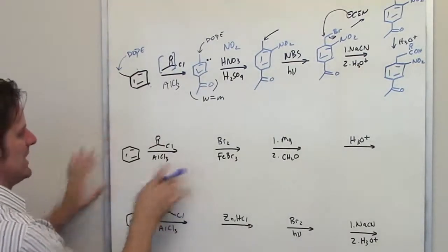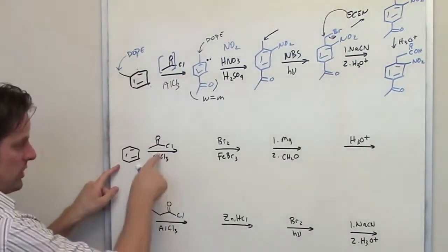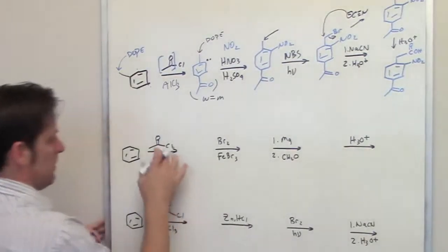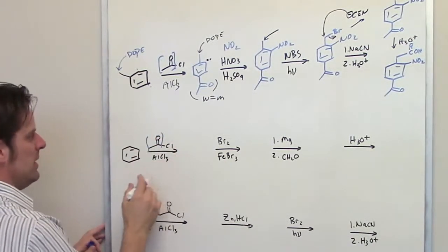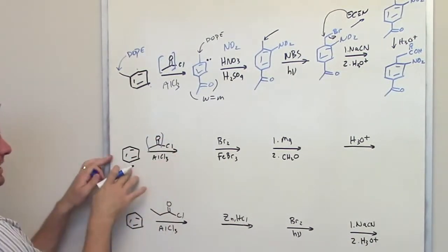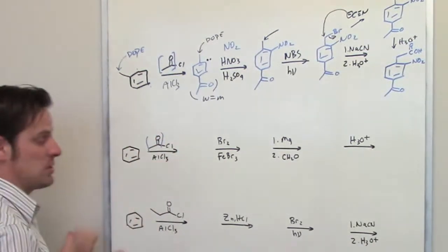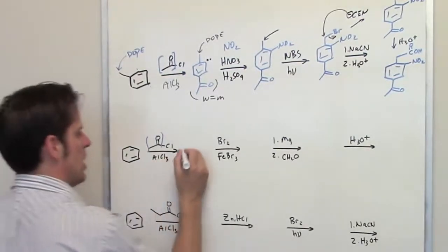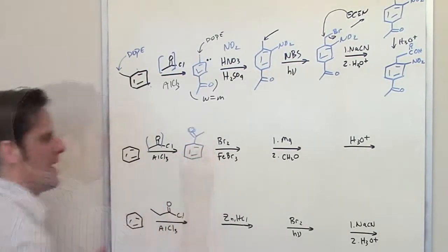Moving to line two: I take a benzene ring and treat it with Friedel-Crafts acylation conditions, placing an acyl group onto the ring. Since there's no existing substituent on the ring, I don't need to consider directing effects. That gives me the acylbenzene product.